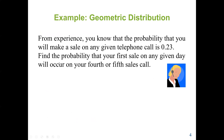Let's try an example. From experience, you know that the probability that you will make a sale on any given telephone call is 0.23. Find the probability that your first sale on any given day will occur on your fourth or fifth call. We are going to find the probability when the random variable is four and also when it's five, then add the two probabilities together. We can use geometric distribution because the probability of success is given.